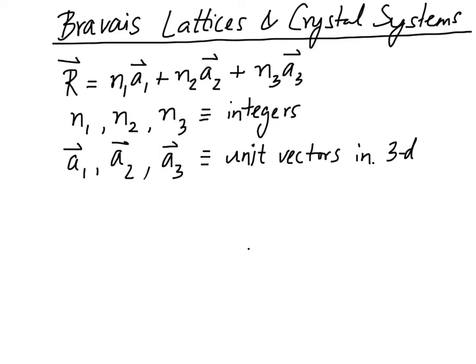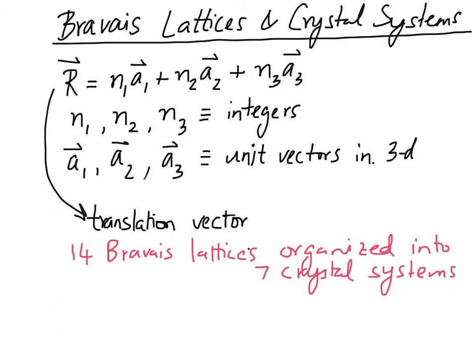So R is what is called a translation vector, which connects any lattice point to any other lattice point via the three-dimensional unit vectors A1, A2, and A3, where N1, N2, N3 are integers. It turns out that there are 14 distinct Bravais lattices one can imagine in three-dimensional space, and these 14 different and distinct Bravais lattices can all be organized into seven crystal systems. We are now going to systematically look into the 14 Bravais lattices and the seven crystal systems.